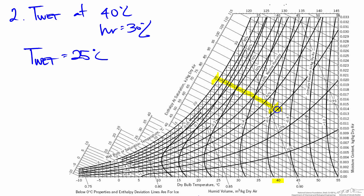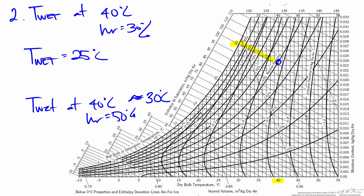So here the wet bulb temperature is about 25 degrees, which is substantially lower than 40 degrees due to the relatively low moisture content at 30% relative humidity. To illustrate how this changes as a function of moisture content, let's look at the example where we are at 40 degrees and 50% relative humidity. Moving along a different line of constant wet bulb temperature diagonally up and left to the saturation curve, we can see that the wet bulb temperature is something greater than 30 degrees — between 30 and 31. As we would expect, increasing the relative humidity increases the wet bulb temperature, and as we approach 100% relative humidity the wet bulb temperature would approach the dry bulb temperature of 40 degrees.